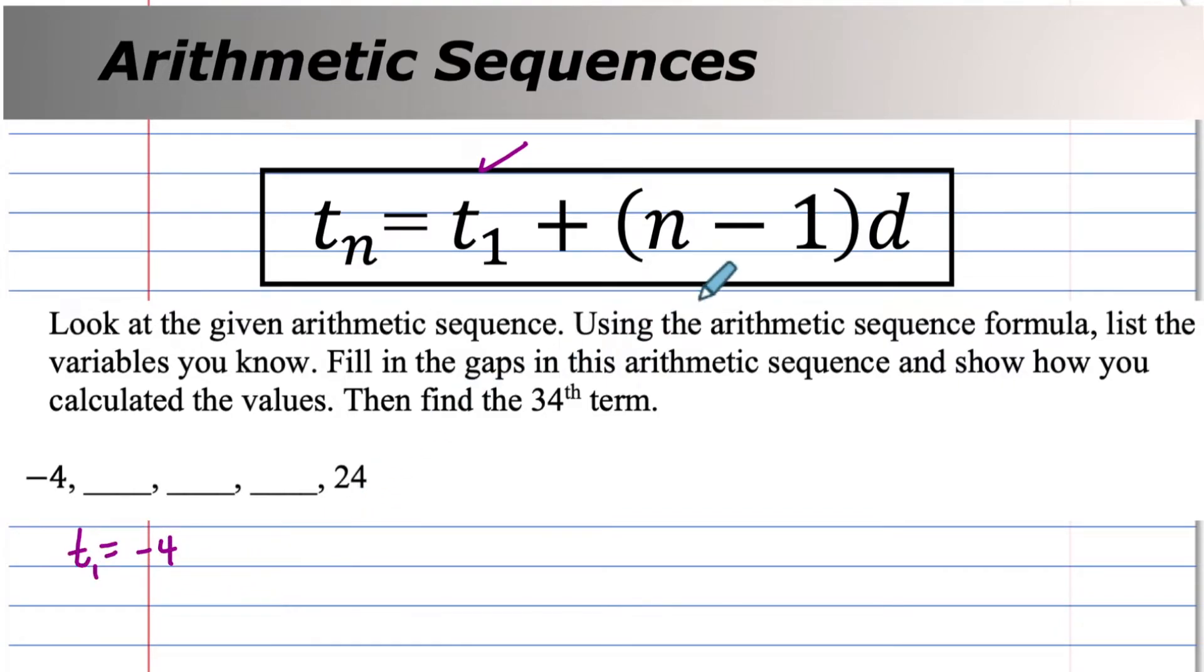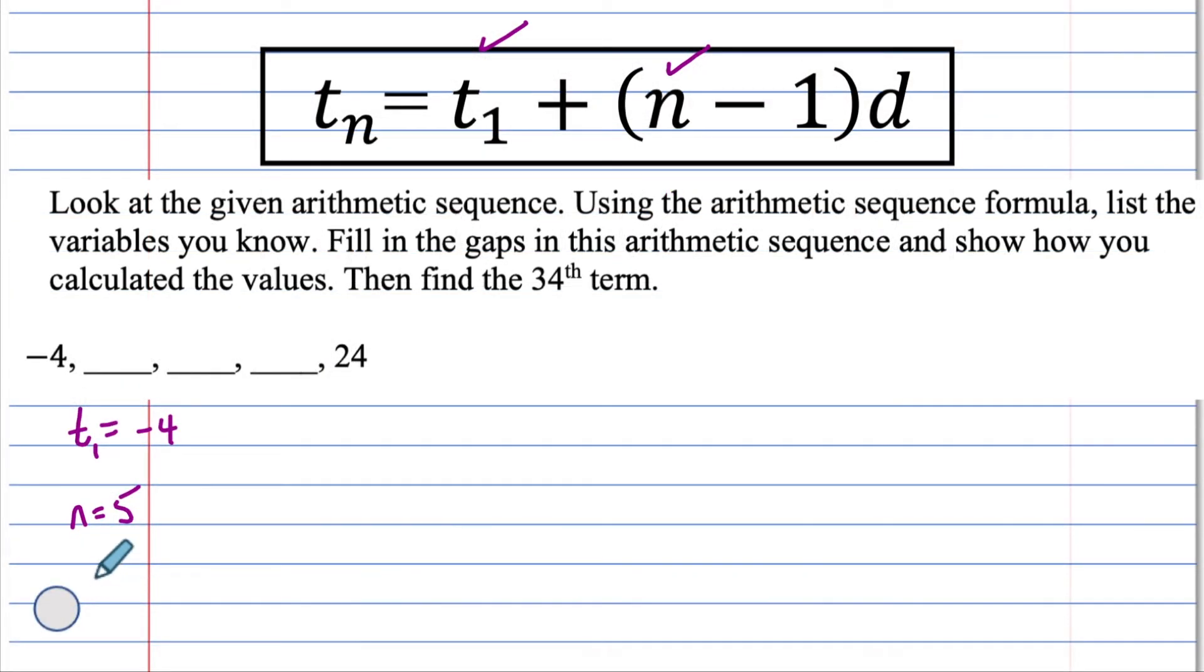Do you know N, the number of terms? Yes. One, two, three, four, five. Do you know D? No. Do you know T of N, or in this case, T of five, is the last value? And yes, you do. It's 24.